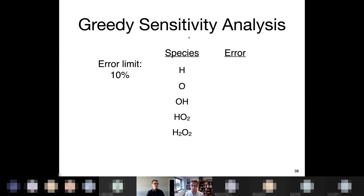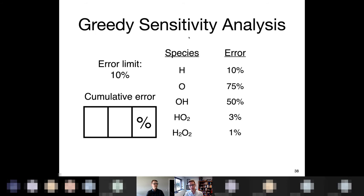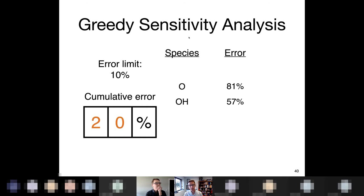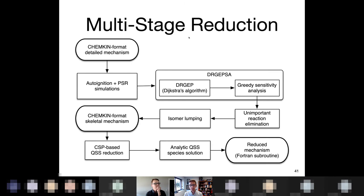There's another method known as sensitivity analysis — a bit more brute force — where we actually look at each of the remaining species one by one, remove them from the model, and see what error is induced in simulations. For example, hydrogen peroxide at the bottom induces only 1% error — that's within the tolerance of most experimental measurements, so we can get rid of it. Then we do the same thing over again — that's the greedy part. We reevaluate the remaining species. HO2 only increases error by 5%, still within our limit of 10%. We keep doing this until removing any remaining species would cause the error to jump above our limit.